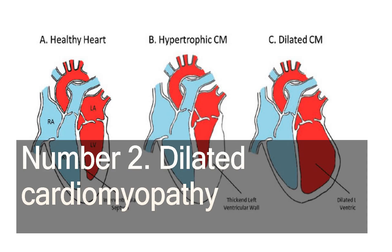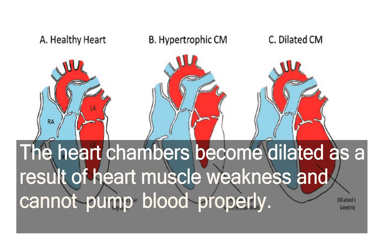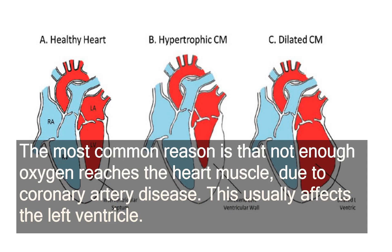Number two: dilated cardiomyopathy. The heart chambers become dilated as a result of heart muscle weakness and cannot pump blood properly. The most common reason is that not enough oxygen reaches the heart muscle due to coronary artery disease.